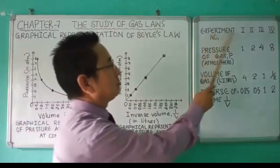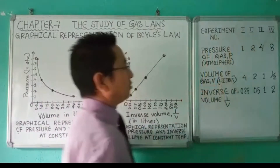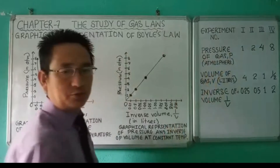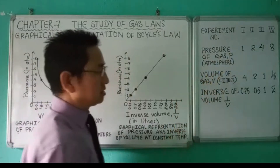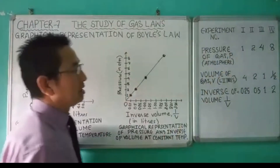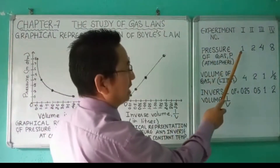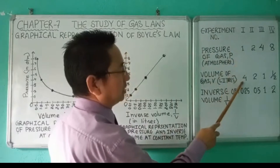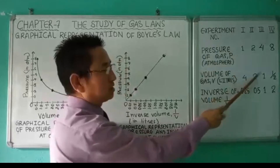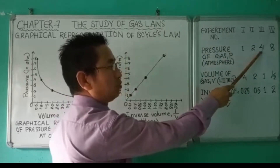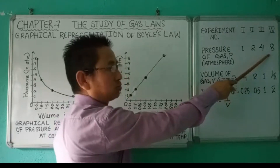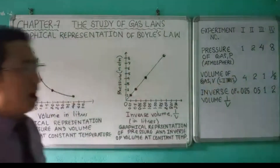Here experiment number 1, 2, 3, and 4. Pressure of gas P in atmosphere, volume of gas V in liters, and inverse of volume that is 1/V. When pressure is at 1 atmosphere, the volume of the gas is 4 liters. When pressure is at 2 atmosphere, the volume of the gas is 2 liters. When pressure is at 4 atmosphere, the volume of the gas is 1 liter. When pressure is at 8 atmosphere, the volume of the gas is 0.5 liters.